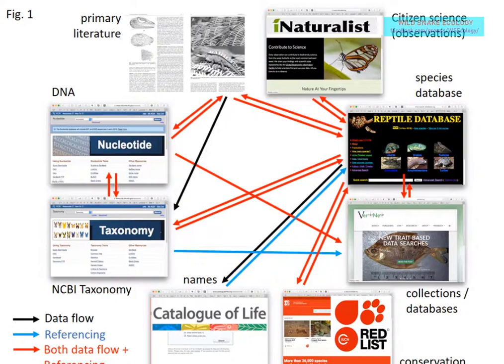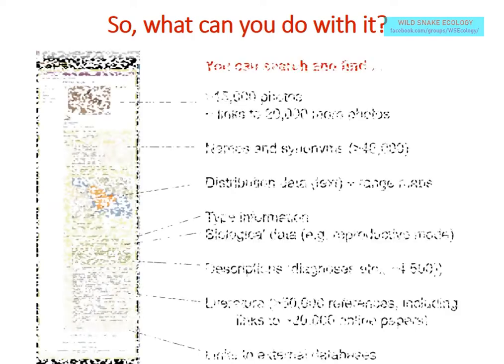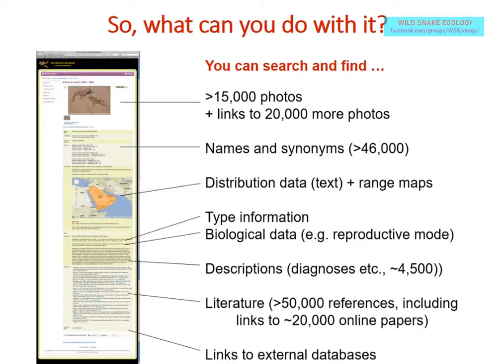All these databases are cross-linked in various ways — we exchange, receive, and send data to many others including the Encyclopedia of Life and Wikipedia. It's really critical these days to update and exchange information with many other sources, because you can't store all that information yourself.